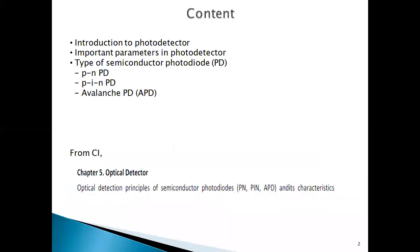The content for today's lecture is as follows. First, we're going to cover the introduction to photodetectors and see what the important parameters are. Then we're going to look at types of semiconductor photodiodes, which include the PN photodiode, the PIN photodiode, and also the avalanche photodiode (APD). We will learn the principles of optical detection in semiconductor photodiodes and their characteristics.